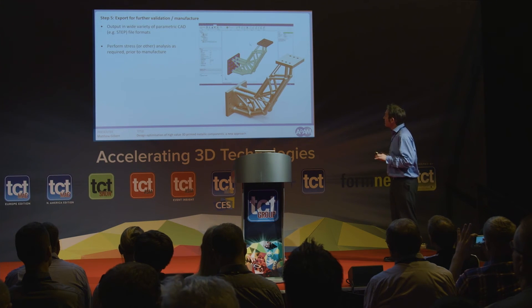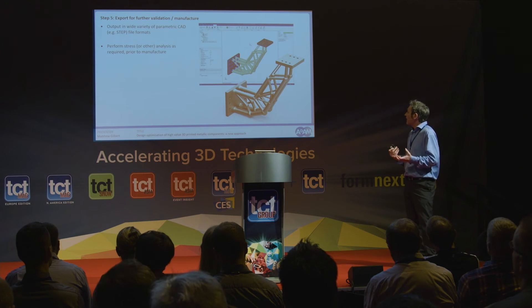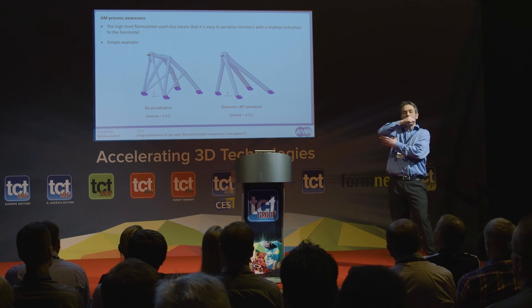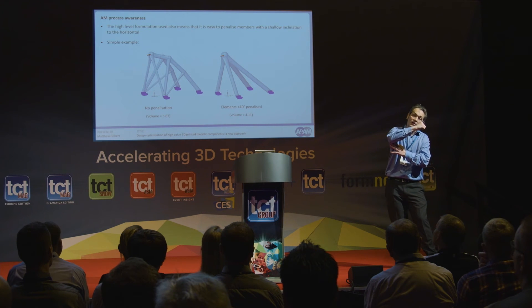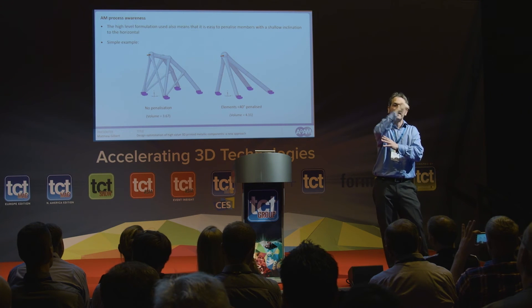Because we've got high-level discrete members, we can have true CAD output from the process. In terms of AM process awareness, because we're dealing with these high-level structural members, we can say that members with a shallow inclination to the horizontal are penalized — making it more expensive to produce those than members at, say, 90 degrees. That can help us, albeit in a relatively simplistic way, to take account of the limitations of certain manufacturing processes.